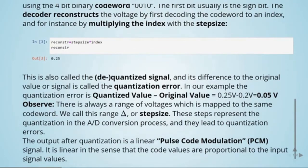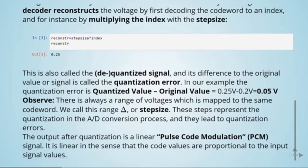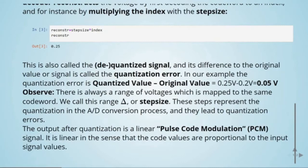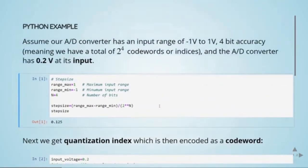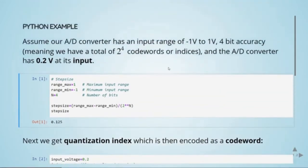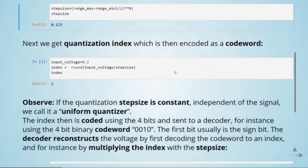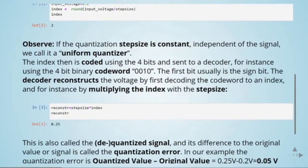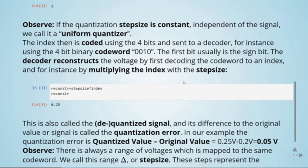There will always be a range of voltages mapped to the same code word, and this range is our step size. These steps represent the quantization in the analog-to-digital conversion process and lead to quantization errors. The output after quantization is a linear pulse code modulation, and it is linear in the sense that the code values are proportional to the input signal values. To recap: with a uniform quantizer we compute the step size, quantize the input voltage into an index, encode it as a codeword, and reconstruct by multiplying the index by the step size — always incurring quantization errors.